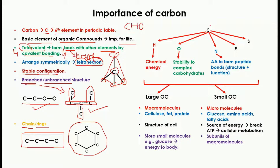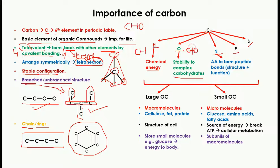In living organisms, carbon is found to form bonds with hydrogen, oxygen, nitrogen, phosphorus, and sulfur. The C-H bond formed in organic compounds is very important because of the chemical energy it provides. The C-O bond is found in the glycosidic linkage, which is very important for the stability of complex carbohydrates — for example, one glucose bound with another glucose through the glycosidic bond.